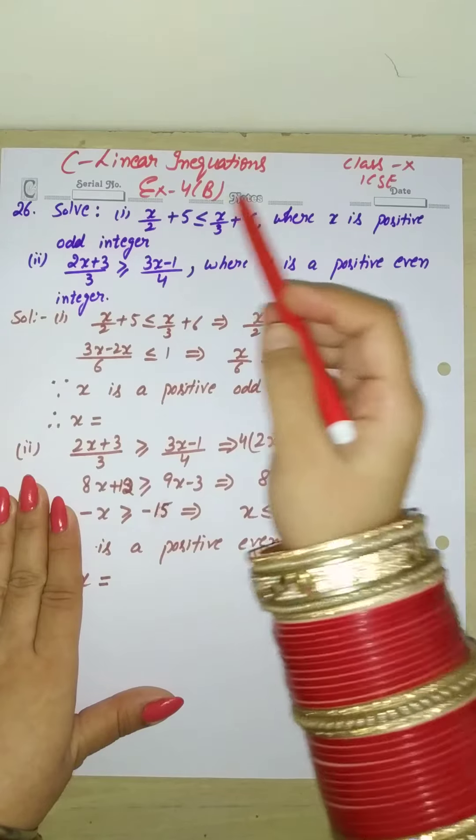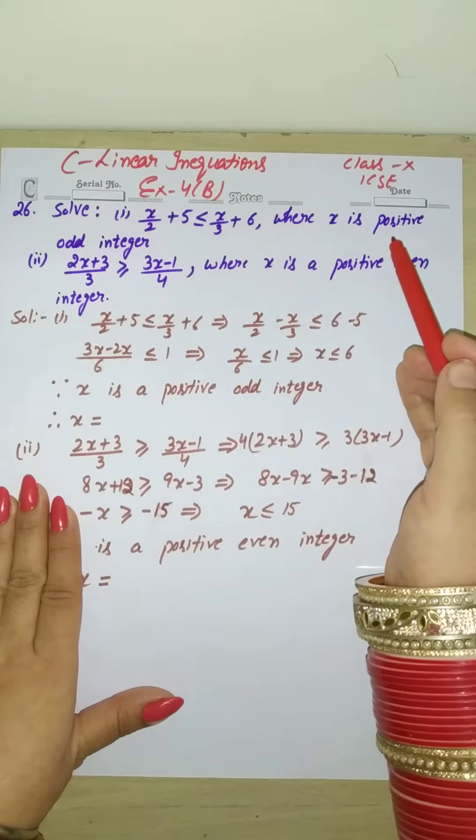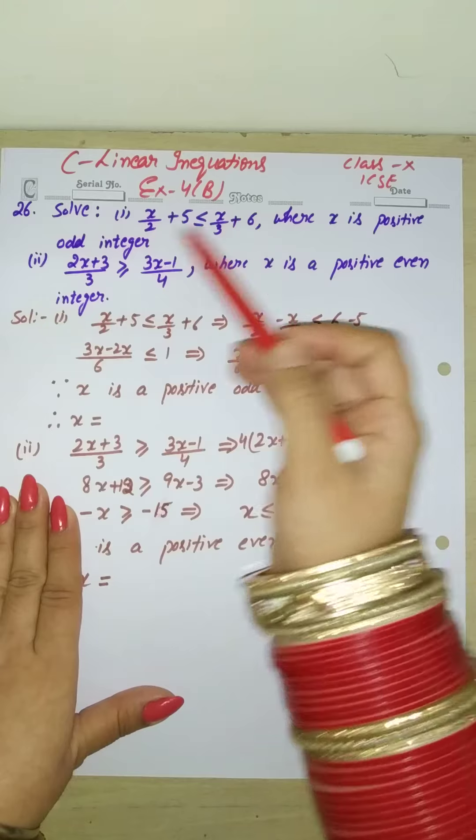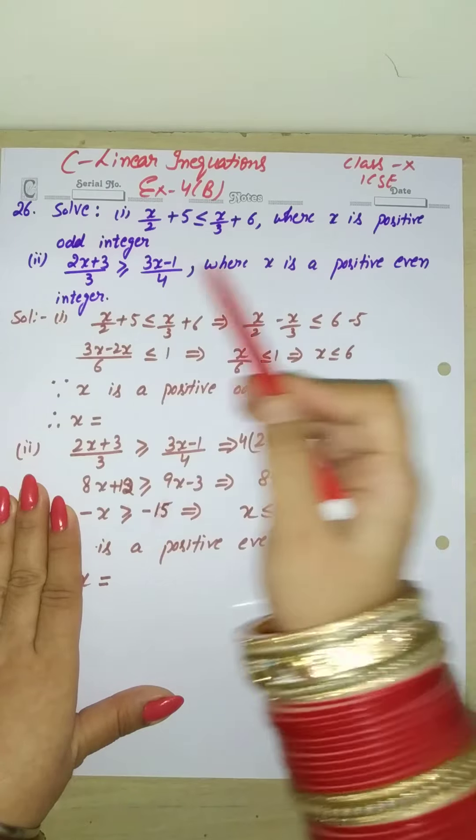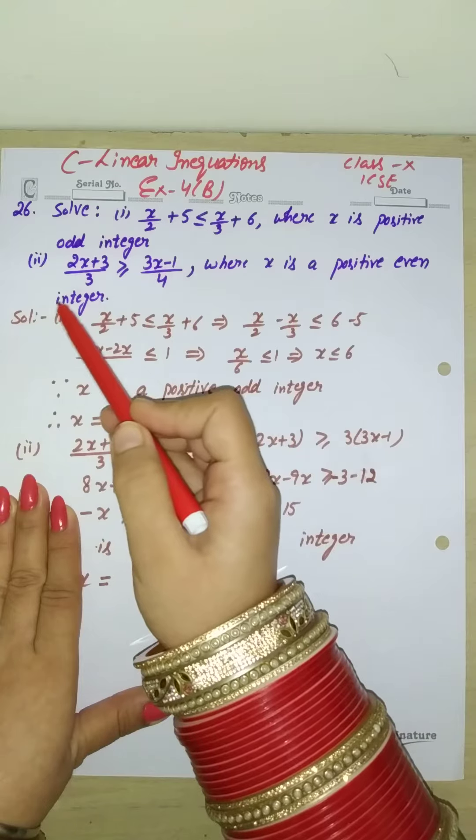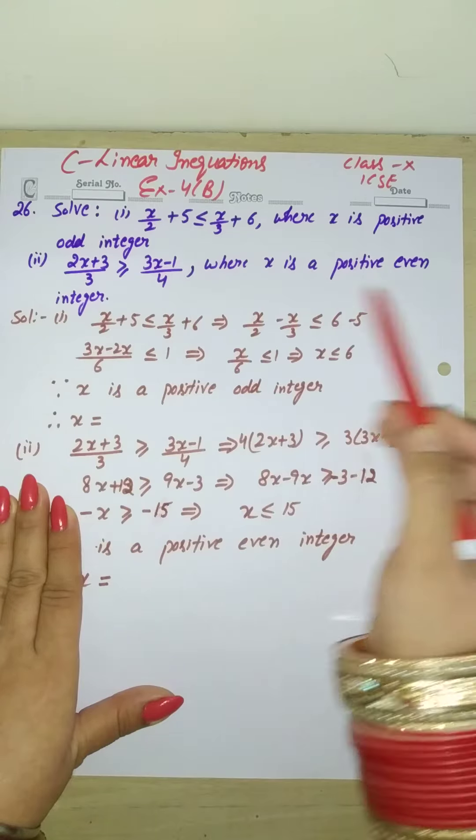Hello students! In this video, we are going to solve linear equations Class 10 ICSE from Selina Concise Book Exercise 4B problem 26. So let's start. Solve this where x is a positive odd integer, and the second part is solve this where x is a positive even integer.